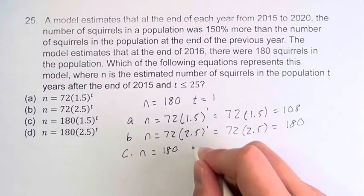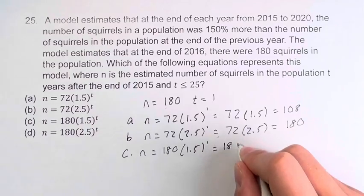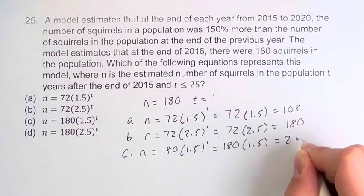Option c: n is equal to 180 times 1.5 to the 1. This is equal to 180 times 1.5, which is 270.